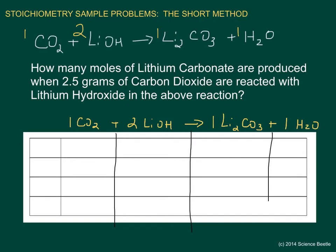The reason we do this is to create columns where at the top of each column you find each compound. We have carbon dioxide, lithium hydroxide, lithium carbonate, and water — four compounds, four columns. Each of these sections is going to be slightly different, and each row is going to have a unique unit that we fill it with.